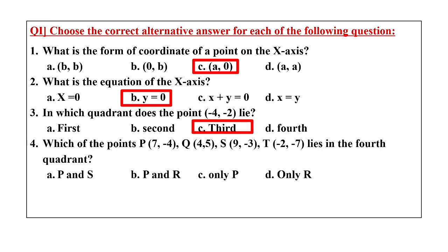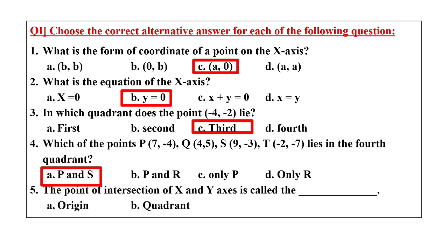The fourth question: which of the points P, Q, S, T lies in the fourth quadrant? For the fourth quadrant, the x coordinate should be positive and the y coordinate should be negative. Among the four points, P and S have positive x coordinate and negative y coordinate, so the answer is option A: P and S.